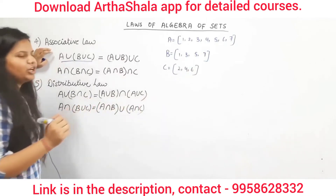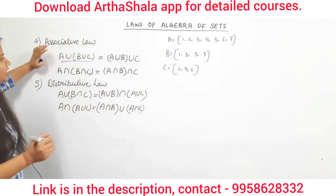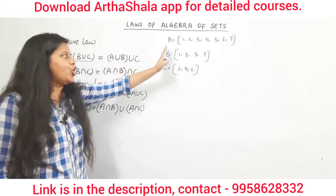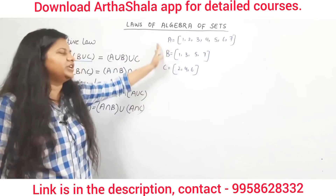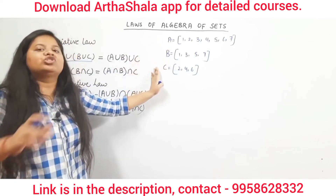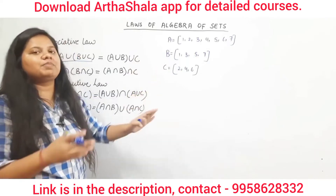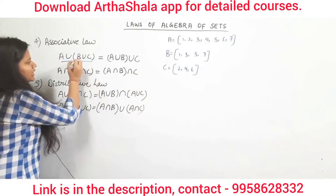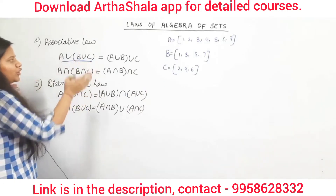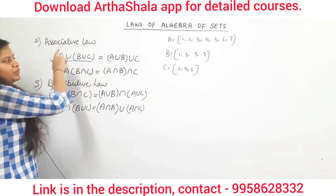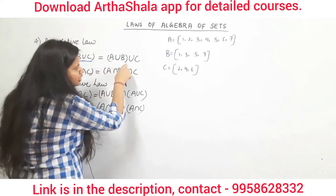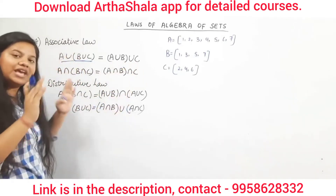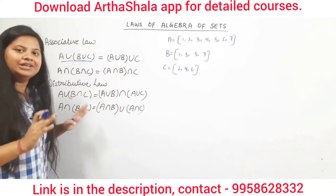The associative law says: if we have three sets and want to find their union or intersection, we do not need to worry about which two we group first. A union (B union C) equals (A union B) union C — both answers are always the same. This is the theorem of the associative law.